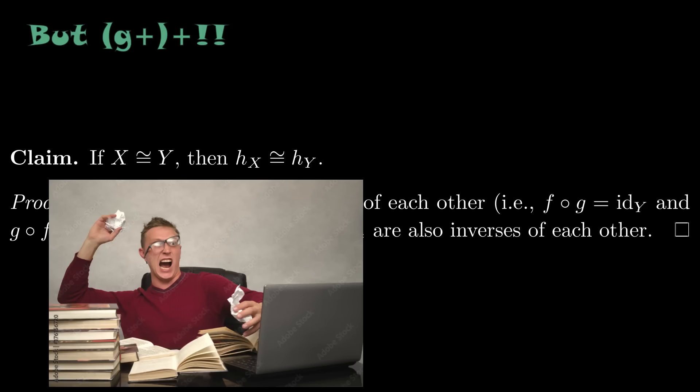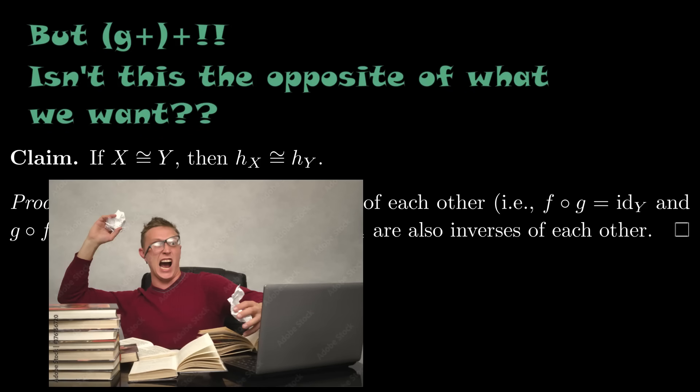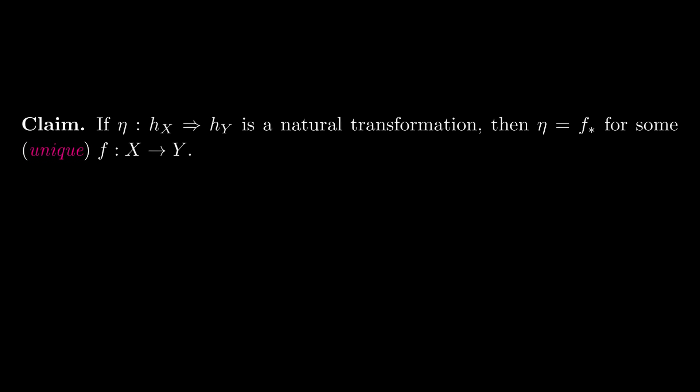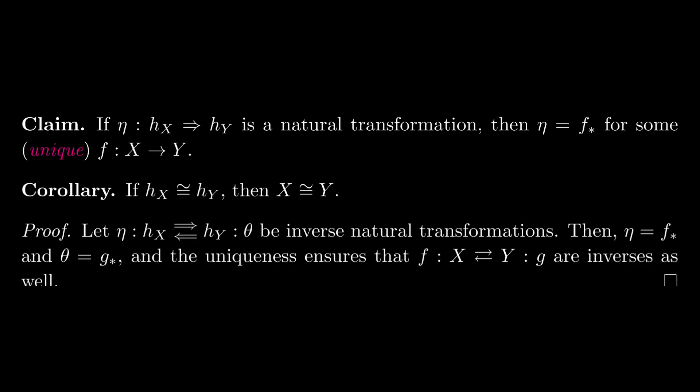But gee, you say, that is the opposite of what we wanted to prove. Yes, we need to go the other way. While it's very straightforward to see how to send maps of objects to natural transformations of pre-sheaves, what we're trying to do is more homo-backward... Get it? Because we're going back to homo- This homo-backwardness is, in fact, true and implies our original claim as well.